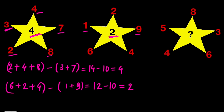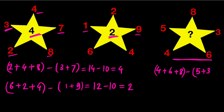Now apply the same logic to the third star. The even numbers are 4, 6, and 8, and the odd numbers are 5 and 3. So 4 plus 6 plus 8 minus (5 plus 3) equals 18 minus 8, which equals 10. So the missing central number is 10 — that is the answer to the puzzle!